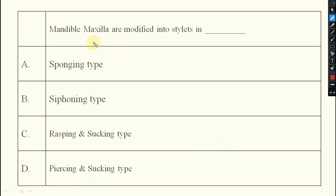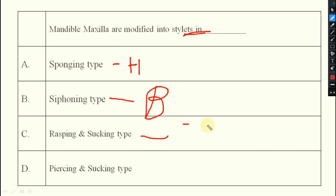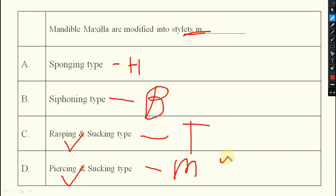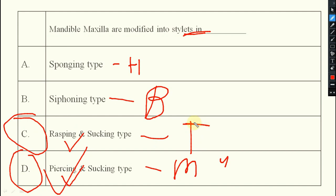Next: mandible and maxilla are modified into stylets in which insect? Options are sponging (housefly), siphoning (butterflies), rasping (thrips), and piercing and sucking (mosquito). Both rasping and piercing types have stylets — 4 stylets are present in piercing and sucking type, and 3 stylets in rasping and sucking type. You should know: 3 stylets in rasping, 4 stylets in piercing and sucking.